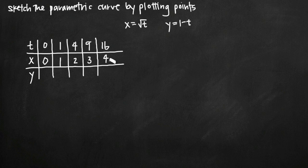So you can see how those were easy to find. So you want to look at your parametric equations and try to pick values for t that are going to be easy for you to evaluate in these equations. Now let's go ahead and plug those same values 0, 1, 4, 9, and 16 into our equation for y.